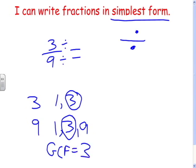So if we divide both of them by 3: 3 divided by 3 is 1, and 9 divided by 3 is 3. So 3 ninths equals 1 third — it's an equivalent fraction, but in simpler form.